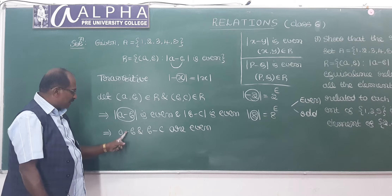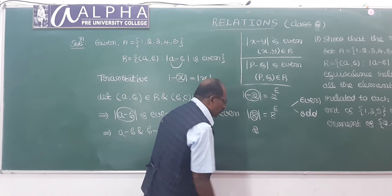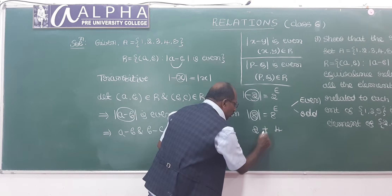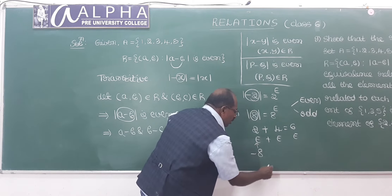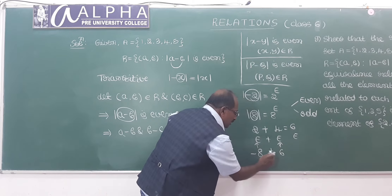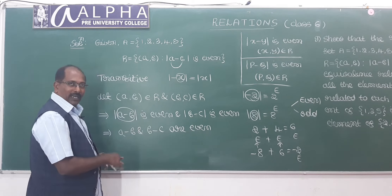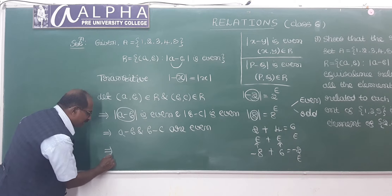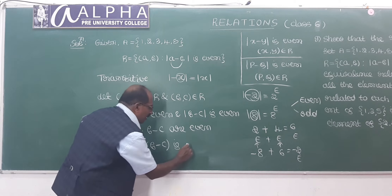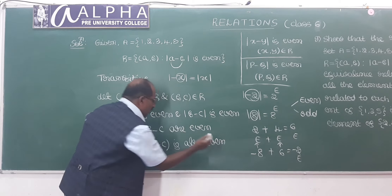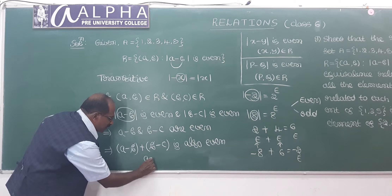Since (a - b) and (b - c) are both even, their sum is also even. For example, 2 is even, 4 is even, and 2 + 4 = 6 which is also even.